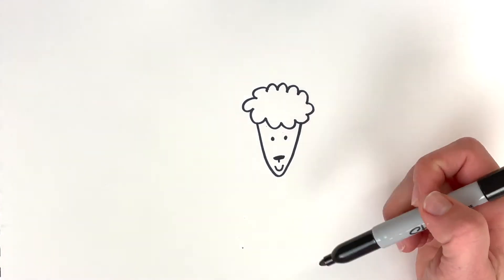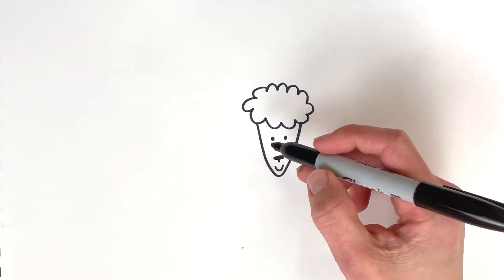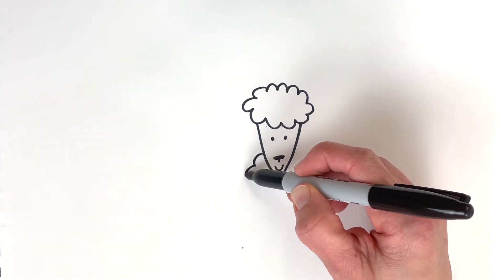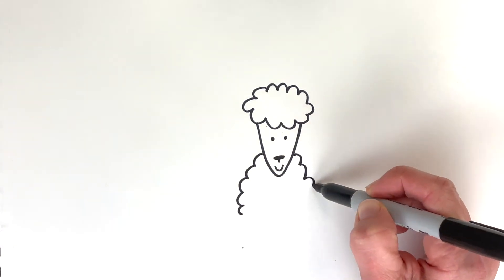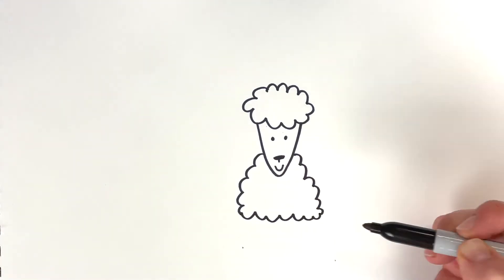Okay. And then kind of like how we did the corgi body, we'll do the same kind of like similar shape, but we're just going to add a curvy line. Okay, great.